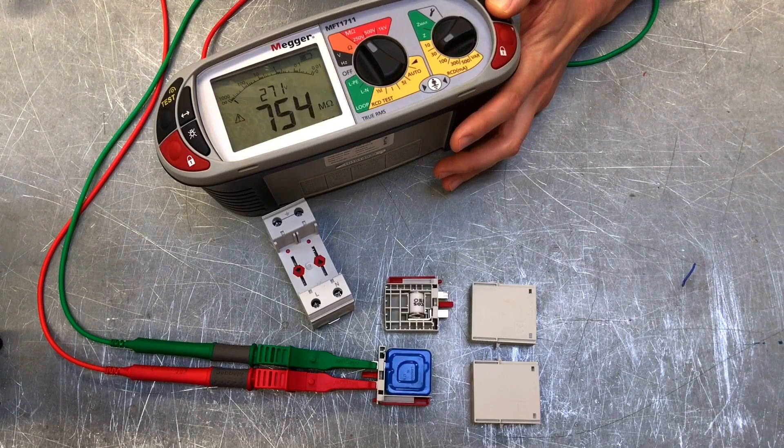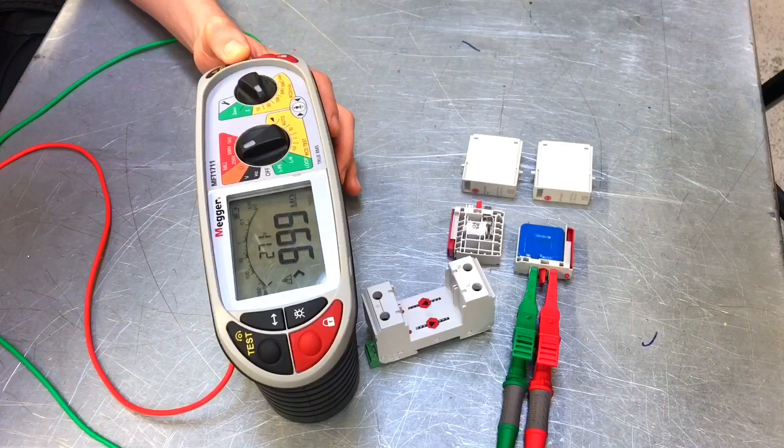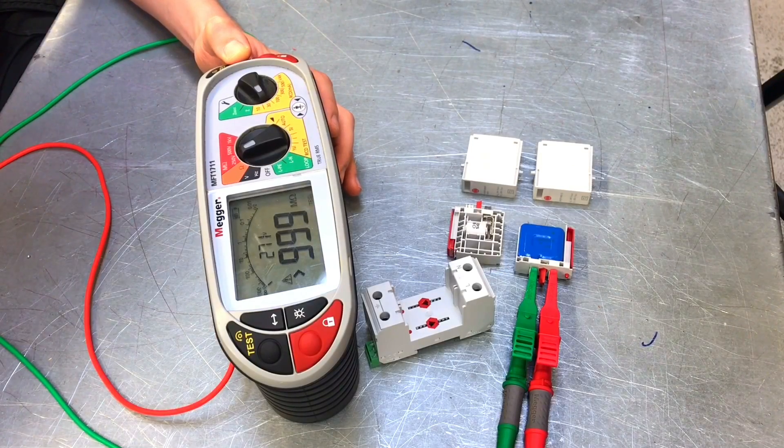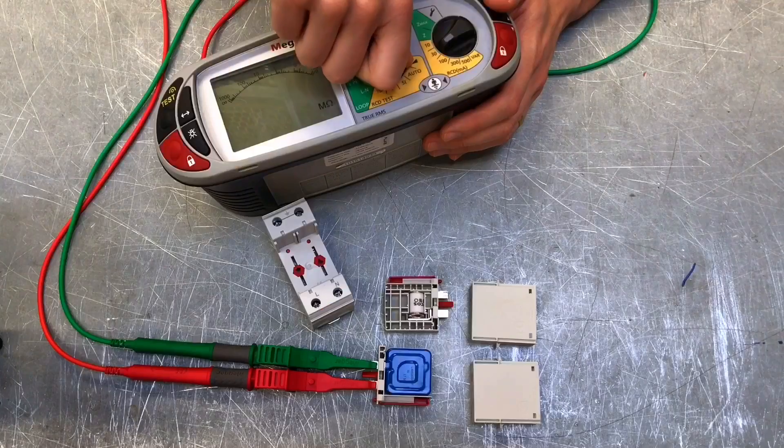So you can see there we've got a very, very high resistance indeed, greater than a million ohms. So effectively there is no connection between those two terminals, which is what we'd want. So what we'll do now is change the applied voltage.